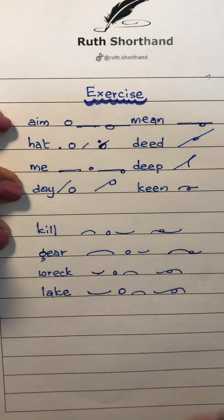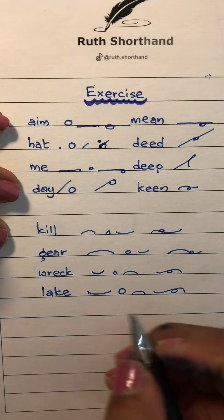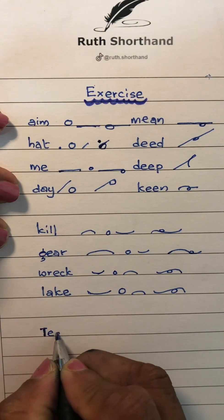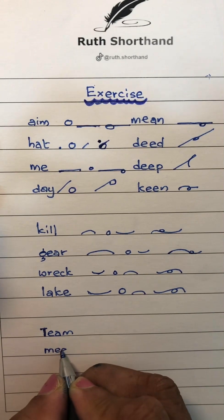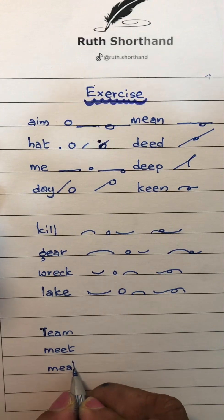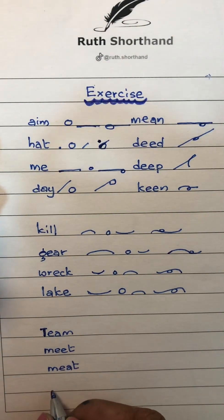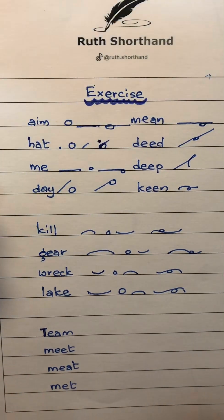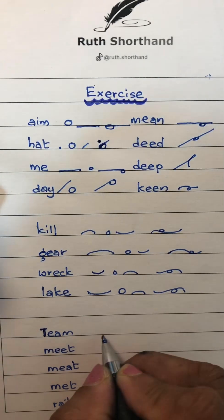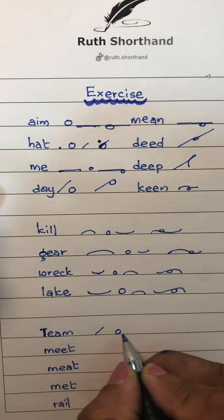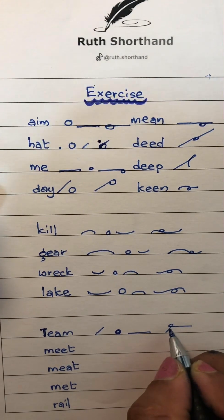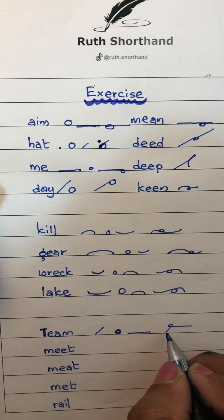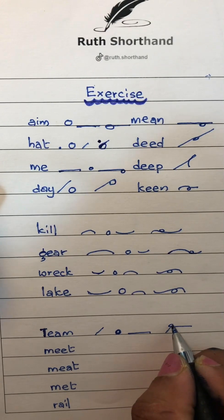Okay, now we are writing here: 'team' and 'meet'. Here again — 'meet'. Okay, 'met' and 'rail'. You can see now: T-E, small circle, M. Now T-E-M, outside. In previous lessons we learned about this T-E out.